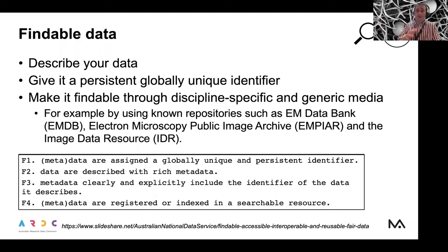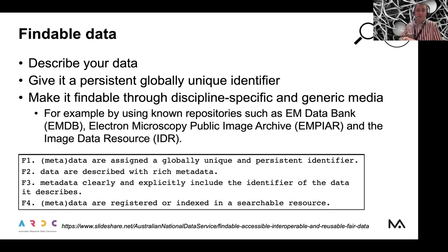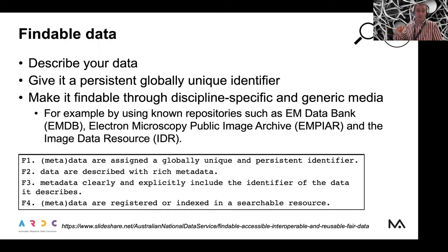What is Findable data? If you describe your data, you give it a persistent identifier to locate it uniquely, and you make it findable through discipline-specific or generic routes. For example, if you're doing microscopy in biological sciences, it's better to use repositories that are well-known in the field — such as the EM Data Bank, the Electron Microscopy Public Image Archive, or the Image Data Resource. But you can also set up your own server, and as long as you can maintain it over time, it's fine to put your data there and refer to that server in your publications.